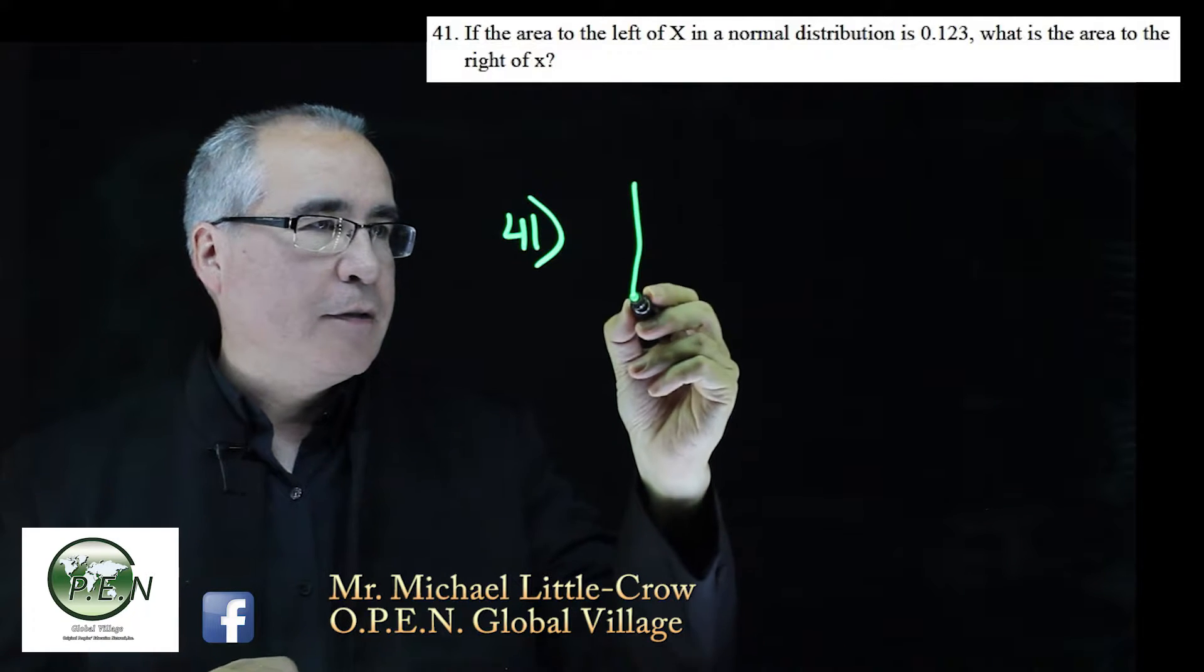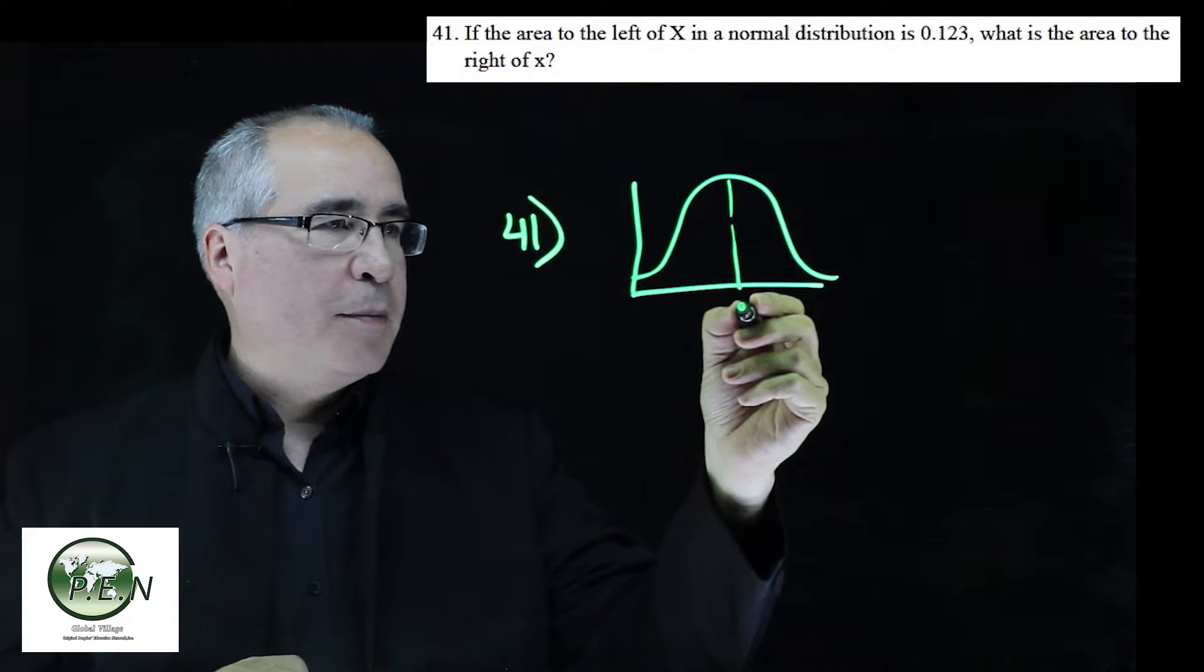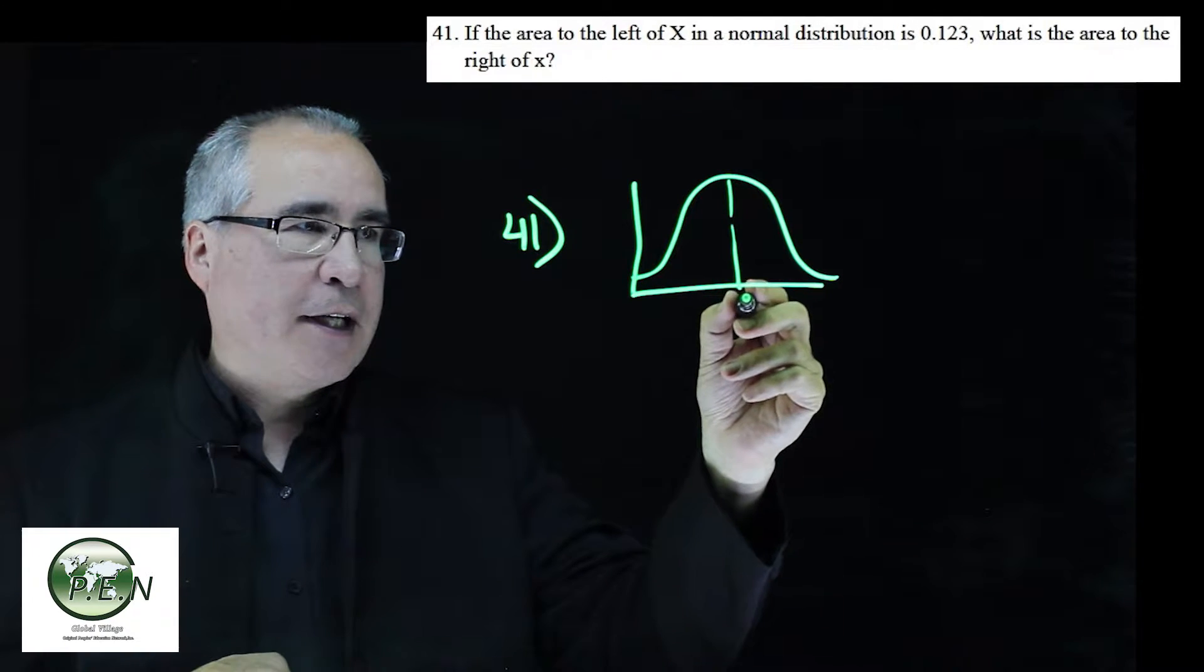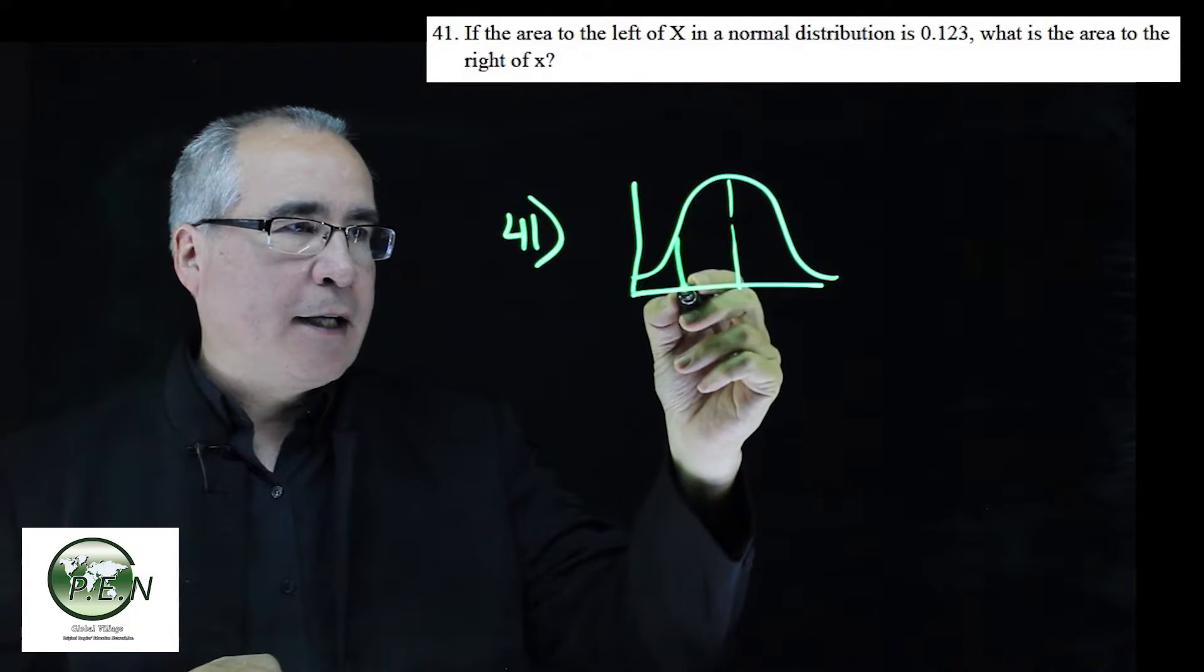So let's just draw this little distribution. We know that this would be 50%, or 0.5 is the mean. So 0.123, I'm just estimating, is probably like out here.